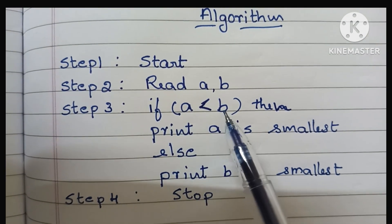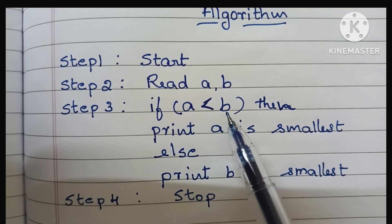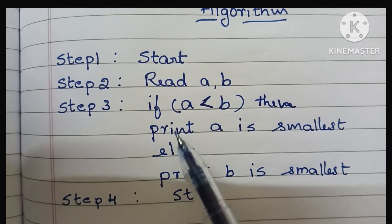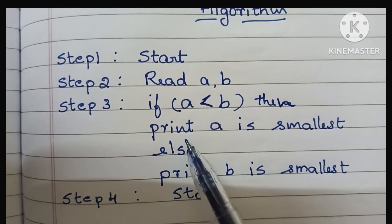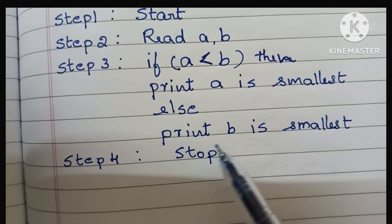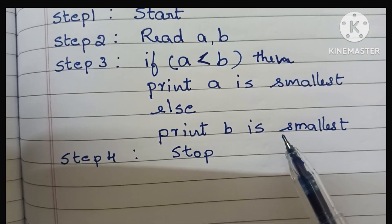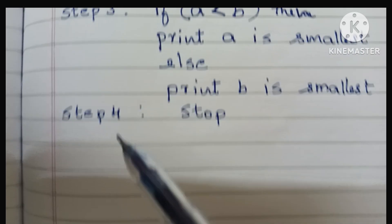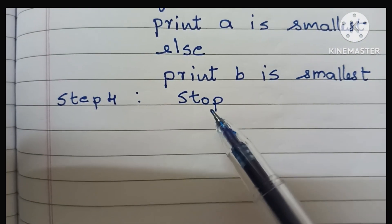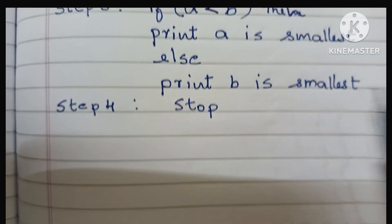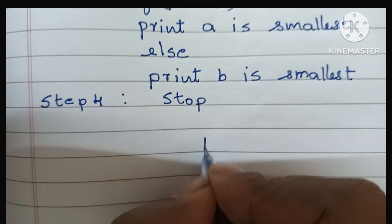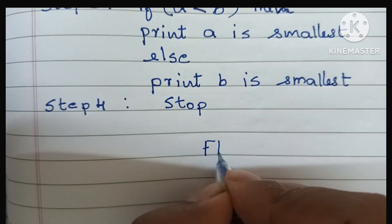Step 3: we have to compare two variables — if a is less than b, and this condition is true, we have to print 'a is smallest'; else we have to print 'b is smallest'. In step 4, we have to stop the algorithm using the stop statement. Next: flowchart.